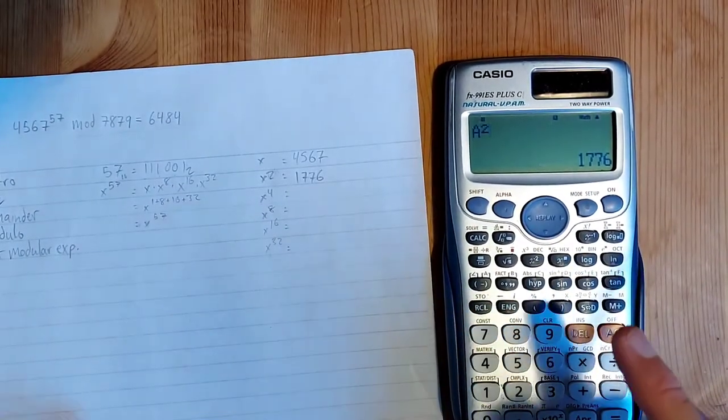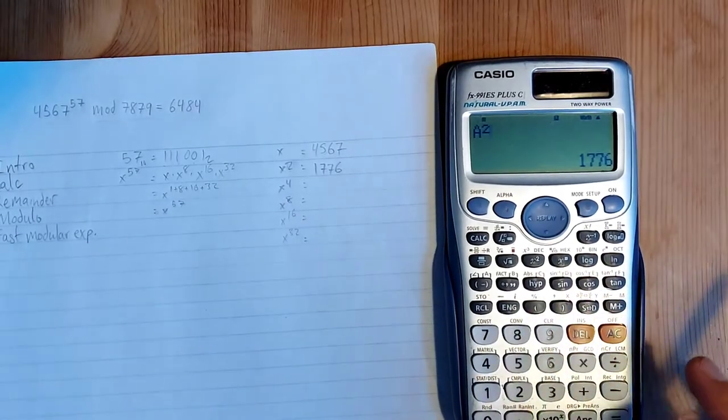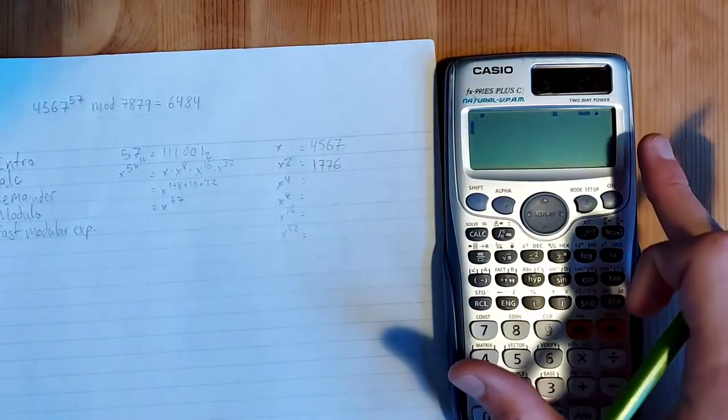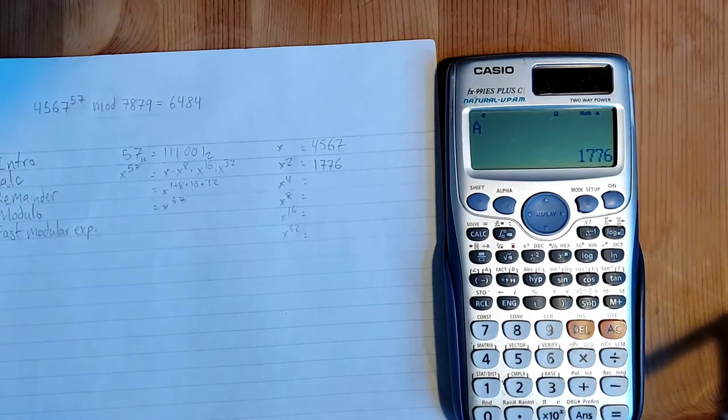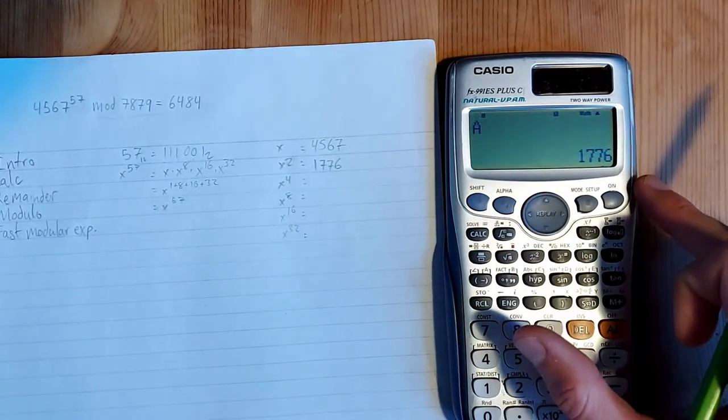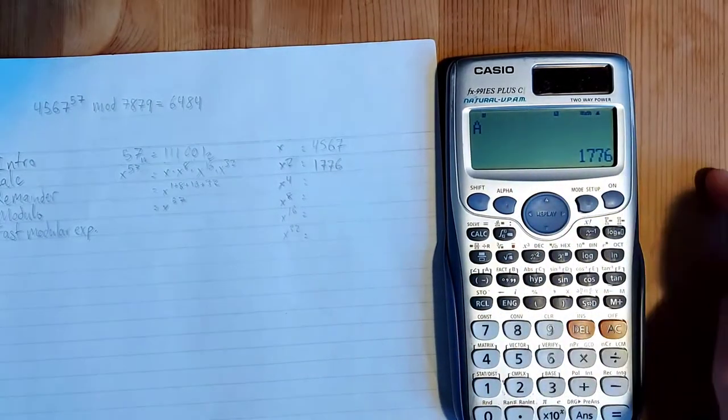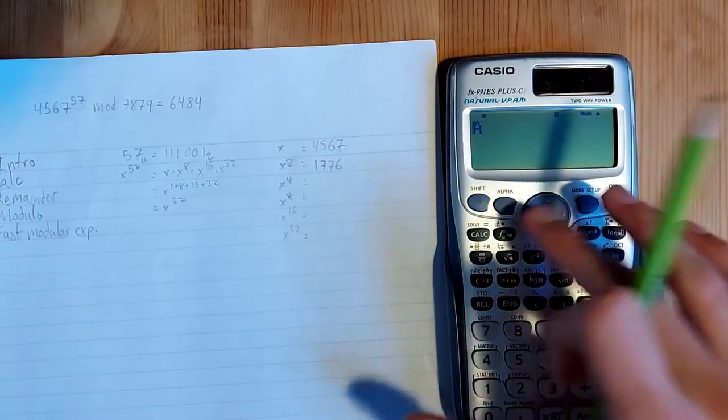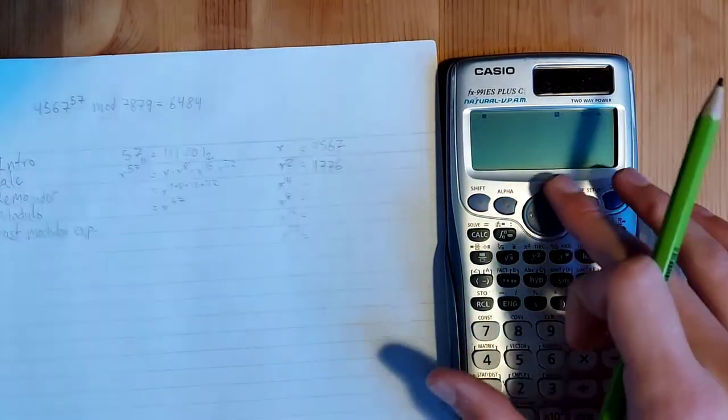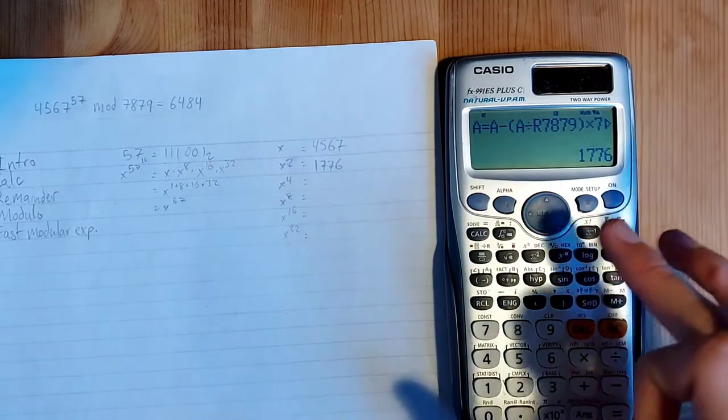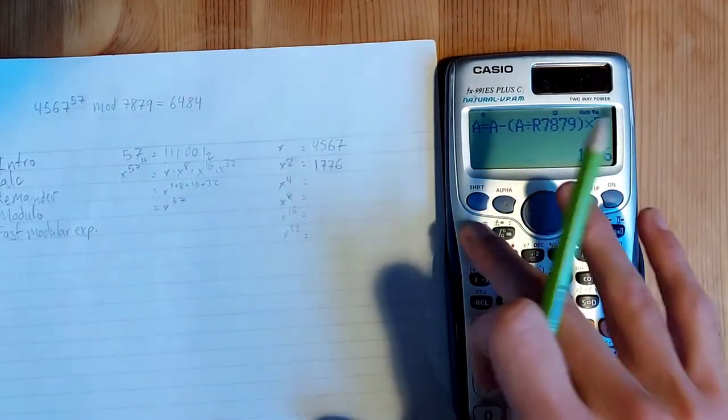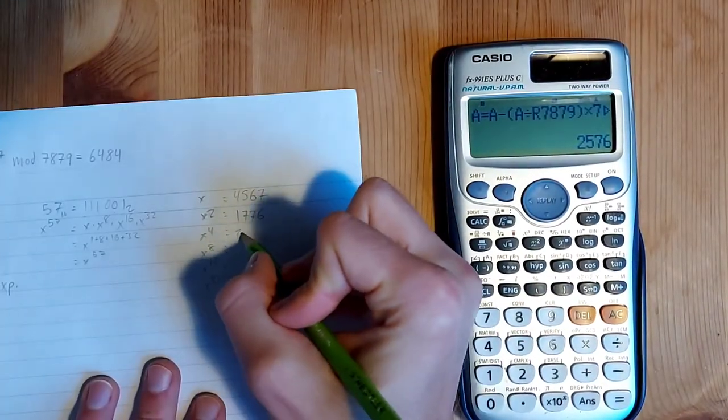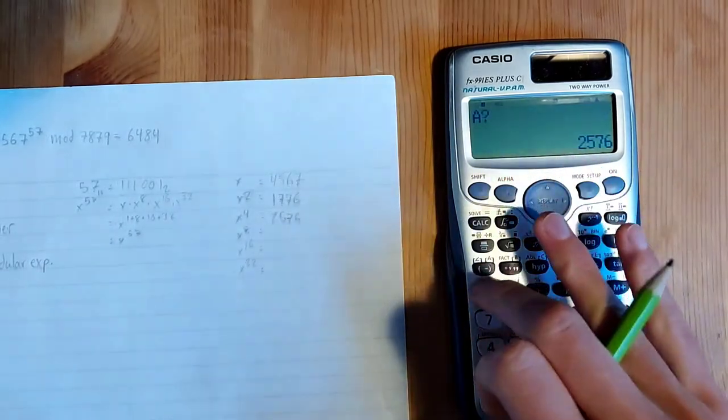And we can basically just do this repeatedly. One tip is that you can use the recall key instead of the alpha key to access these variables. So I'm going to do recall A squared. And the reason why I didn't use that from the start is that somewhat confusingly, if you're just on the main page with nothing else typed in and you hit recall A, it'll just print out the value of A, which is often not what you want.